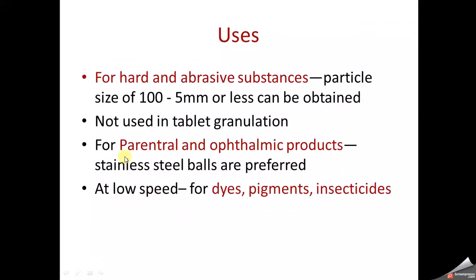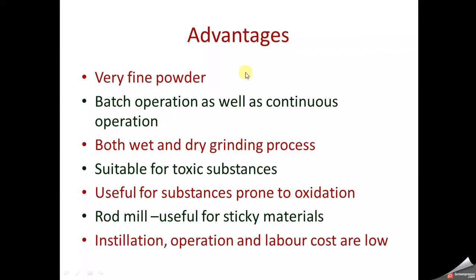Ball mill is used for the size reduction of hard and abrasive substances, producing a final particle size ranging from 100 to 5 millimeters or less. It is not used for tablet granulation but is used for parenteral and ophthalmic products. Being a closed system, it can be used for sterilized products, avoiding contamination. Stainless steel balls are preferred for these applications. At low speeds it is also used for dyes, pigments, and insecticide size reduction.